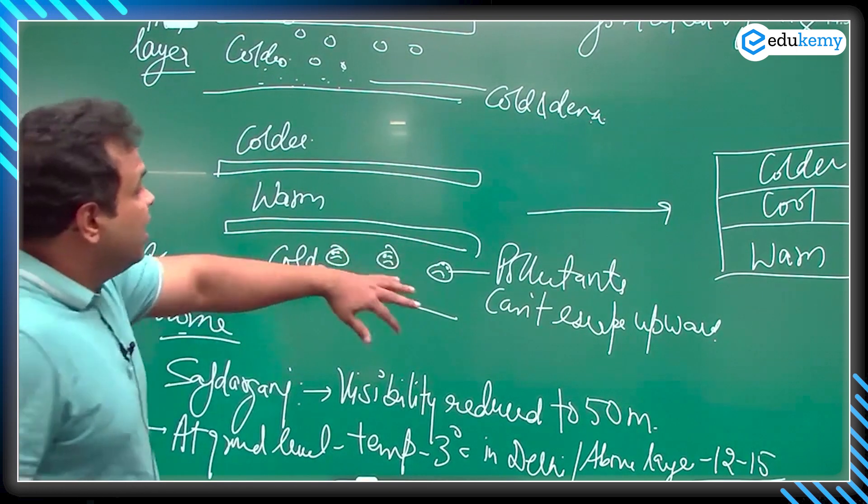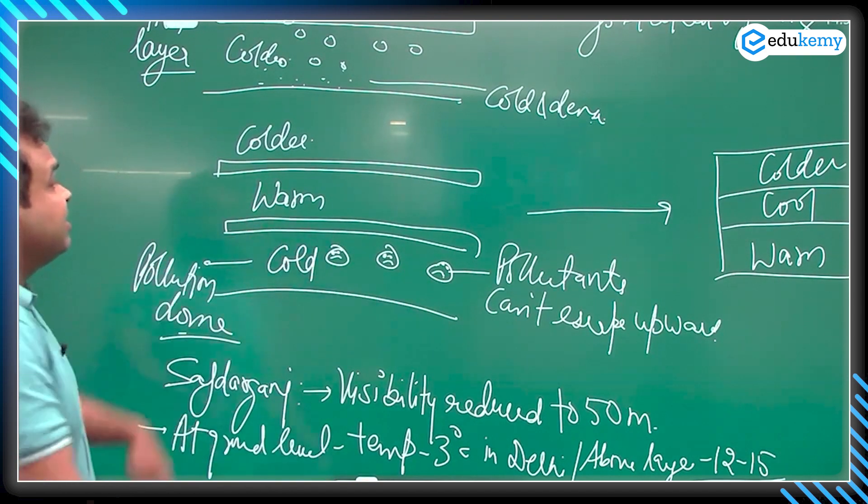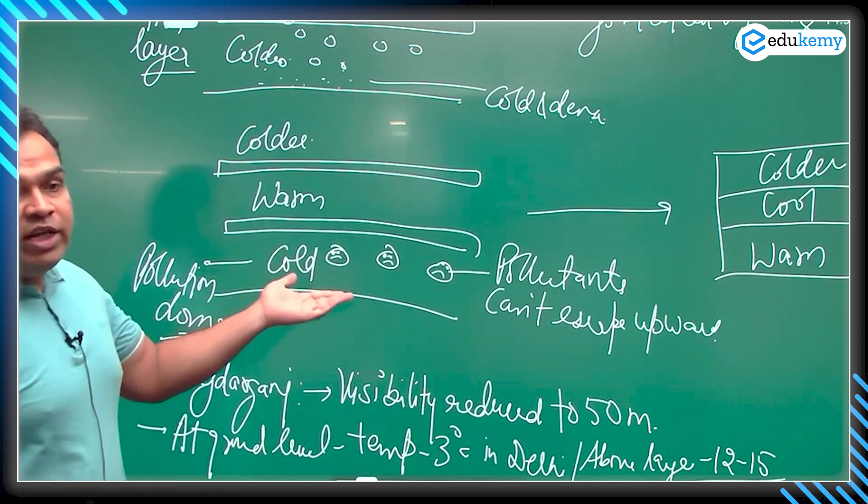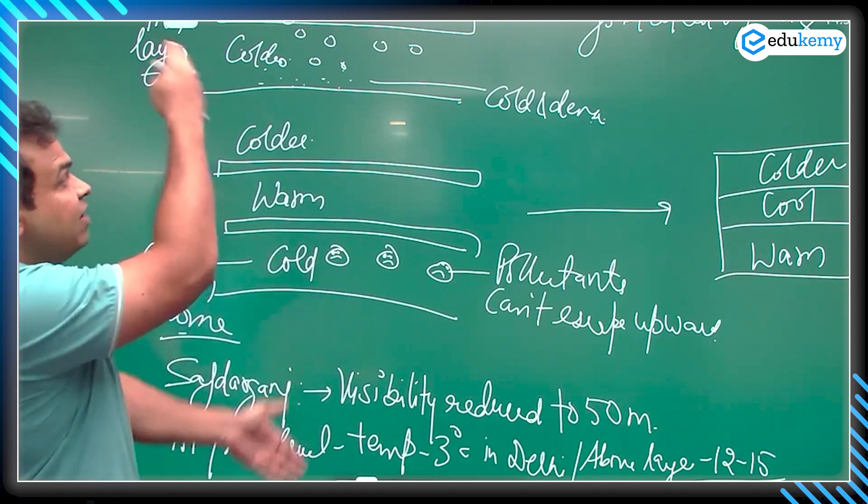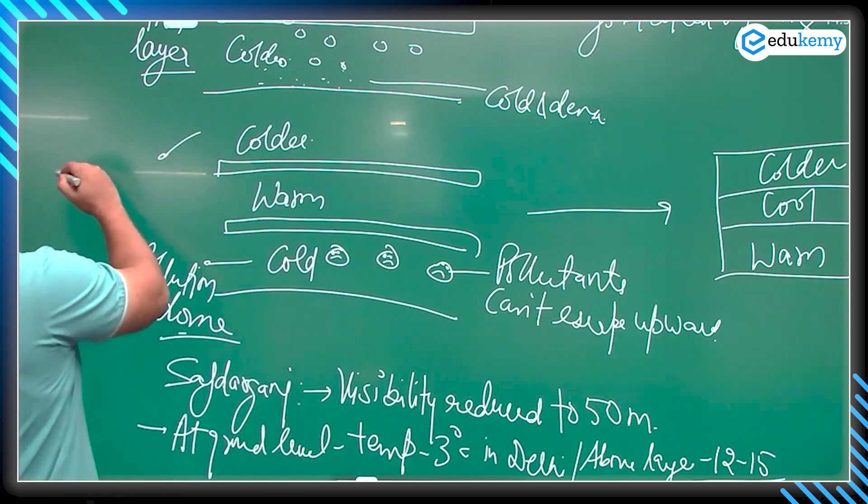And this is the inversion. This is not an example of instability, this is an example of stability. Because this has disrupted the vertical mixing. Vertical mixing could not happen. So this is an example of atmospheric stability.